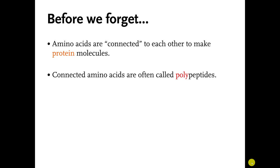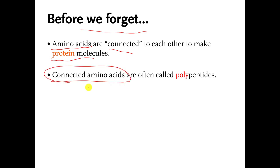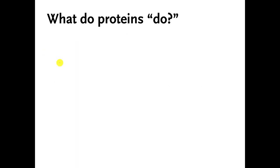Welcome back everybody. Before we move on to a new topic, this is a summary slide — just trying to pound this information into your heads. Amino acid molecules are connected to each other to make protein molecules. That's all we've been talking about so far. Amino acid molecules that are connected in this way are sometimes called polypeptides, usually called protein molecules.